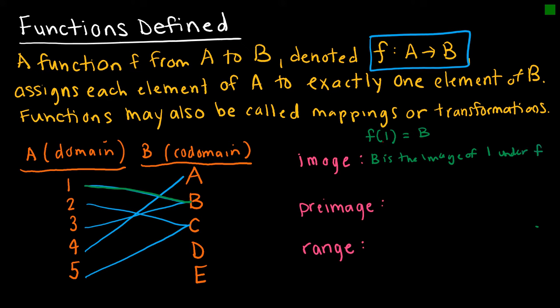So then I can say that b is the image of 1 under f, which would, of course, be that 1 is the preimage of b under f.